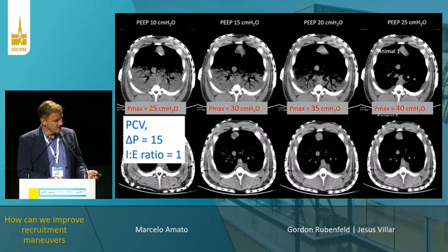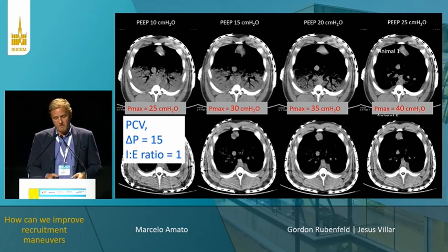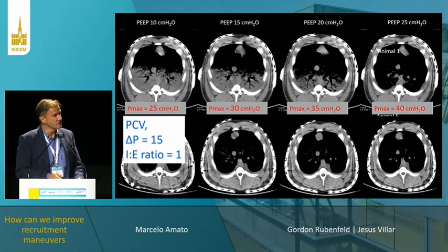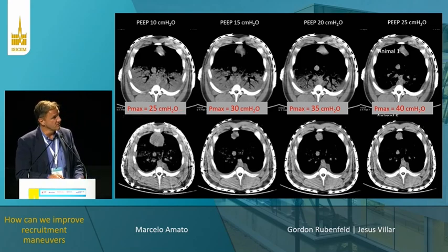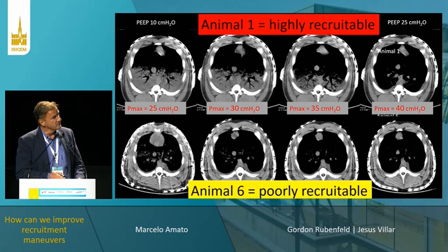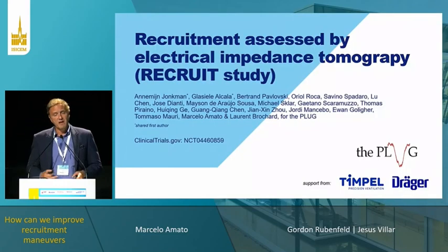This is a patient in which there is no recruitability because the lung is already recruited, or it could be a fixed consolidation that cannot be recruited. So this is what we have in mind.